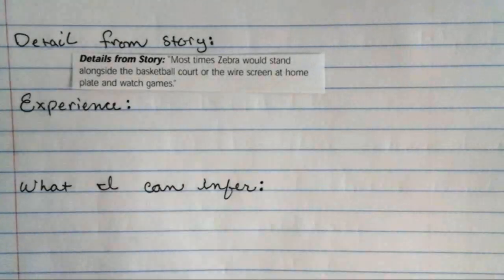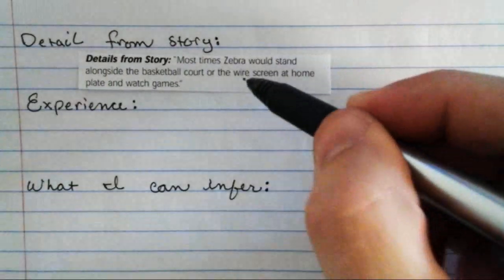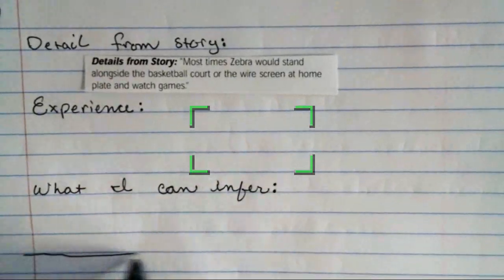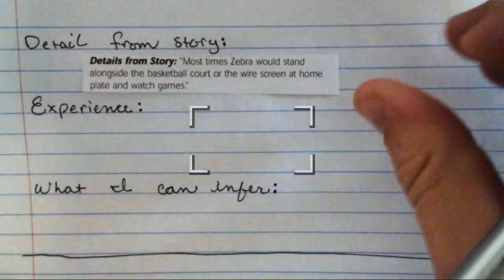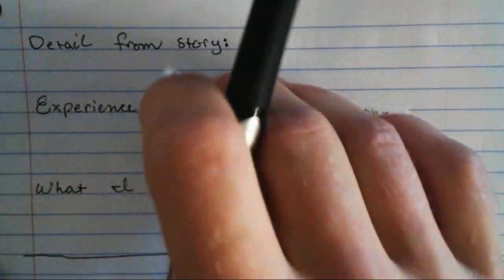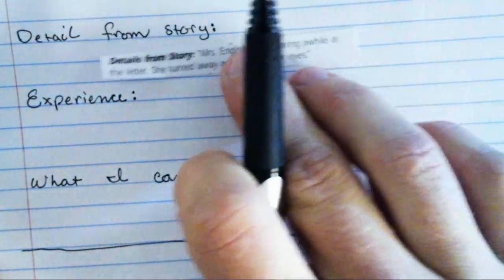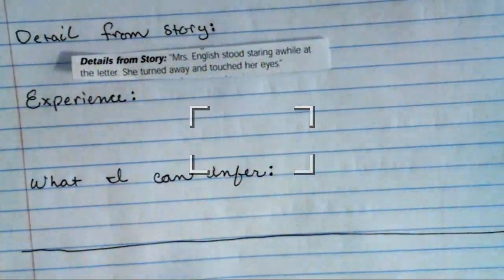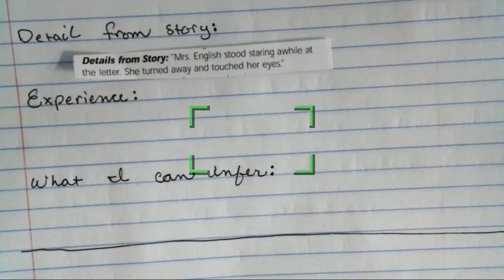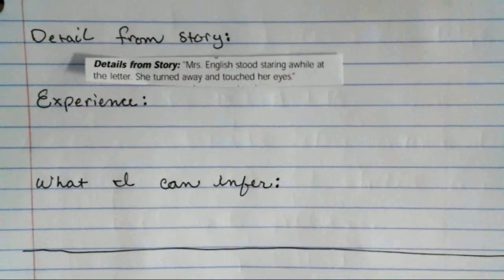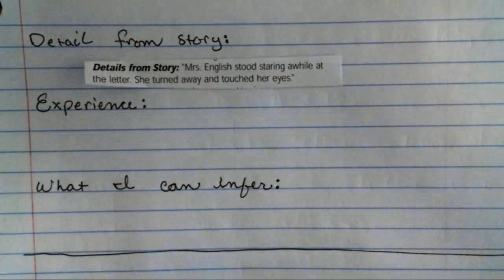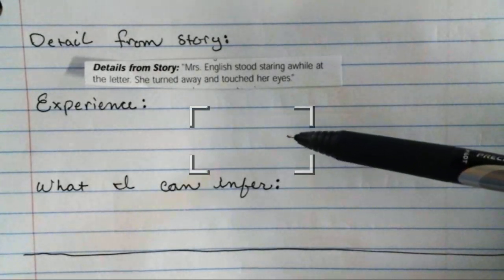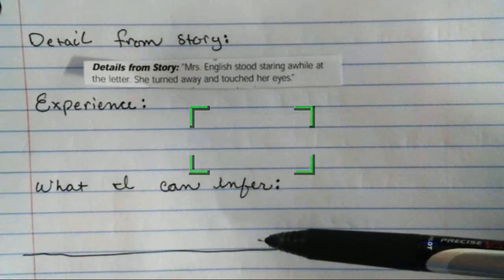That's the first one. After you've filled out all three parts — detail, experience, and inference — make a line, then copy the format again for the next detail from the story, which is: 'Mrs. English stood staring a while at the letter, she turned away and touched her eyes.' What is your experience when people turn away and touch their eyes? What can you infer?